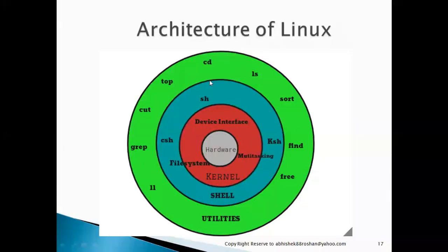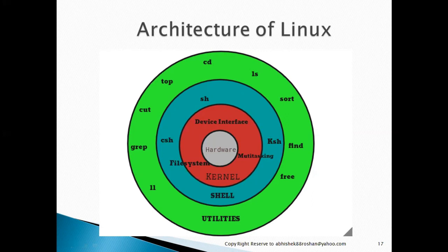This is how each and every level communicates with each other. At the core, your hardware only understands zeros and ones — binary language. On top of that, the kernel takes input from the shell. The shell interprets commands from your user interface — your utilities — which are your applications or commands. These commands are interpreted by the shell, passed to the kernel, and the kernel provides the information to hardware in binary. If you have any doubts, I'm available 24/7. Thank you for watching.